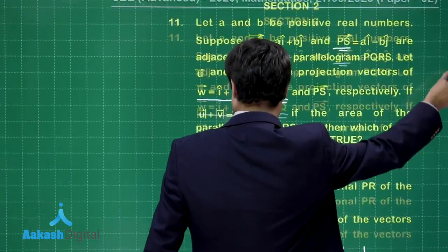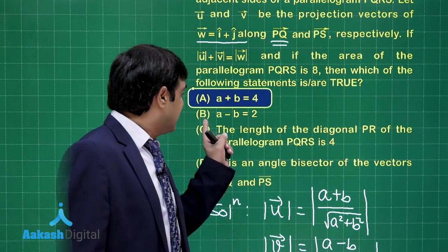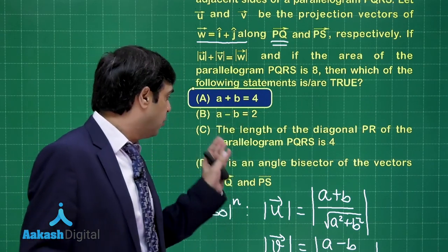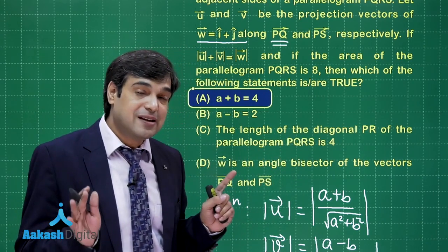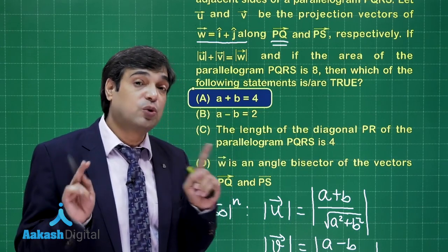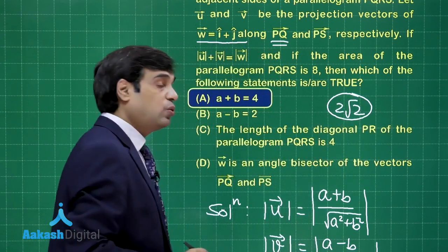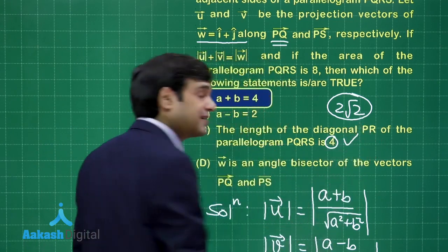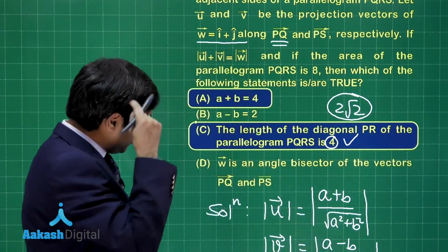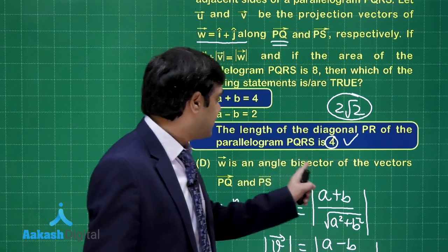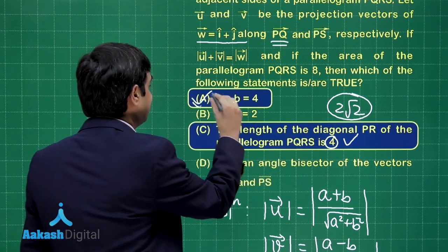Now checking the options: A + B = 4 — correct, since A = B = 2. A − B = 2 — no, it is zero, so incorrect. The diagonal PR of the square: side = √2·A = 2√2, so diagonal = side × √2 = 4 — correct. Option D says W is an angle bisector of PQ and PS — clearly not. So the correct options are A and C.